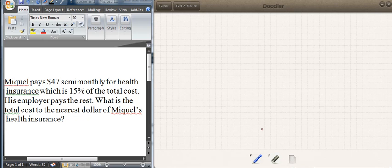Okay, next problem here. We have Miguel. Miguel pays $47 semi-monthly for health insurance, which is 15% of the total cost. His employer pays the rest. What is the total cost to the nearest dollar of Miguel's health insurance?